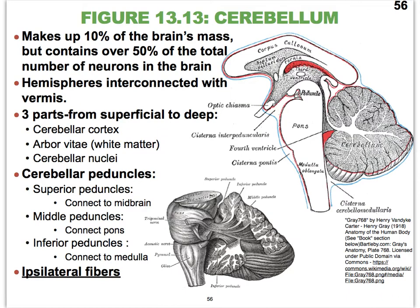The word cerebellum literally means little cerebrum. When we look at its major sub-parts, of which there are three, you'll see that they are very similar to what we see in the cerebrum. The first of the three sub-parts is the cerebellar cortex — an outer layer of grey matter, as we saw in the cerebrum.